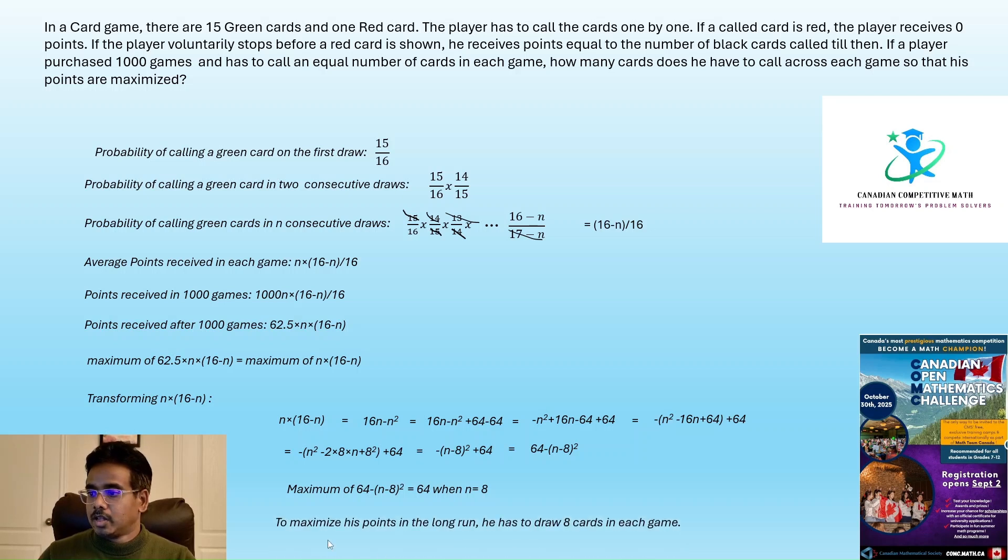Meaning, to maximize his points in the long run over 1000 games, if he keeps drawing 8 cards in each game, even though he loses on some points and he wins on some other points, overall over 1000 games, his points will be maximized.